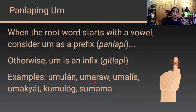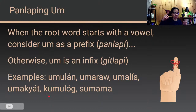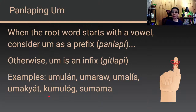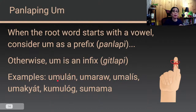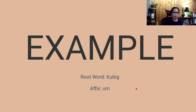Examples: umulan — ulan starts with a vowel. Umaraw — araw means sun. Umalis — alis means leave. Umakyat — akyat means go upstairs. Kulog means thunder — kumulog. Sumama — sama means to join or go with. In umulan, umaraw, and umalis, um is a prefix. In kumulog and sumama, um becomes an infix.